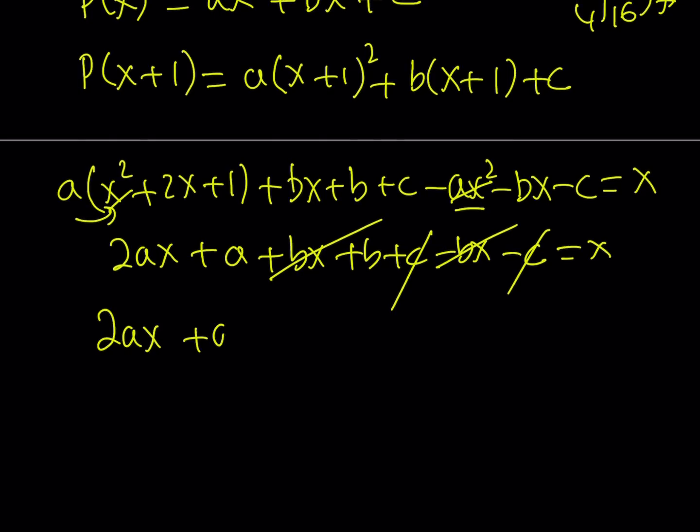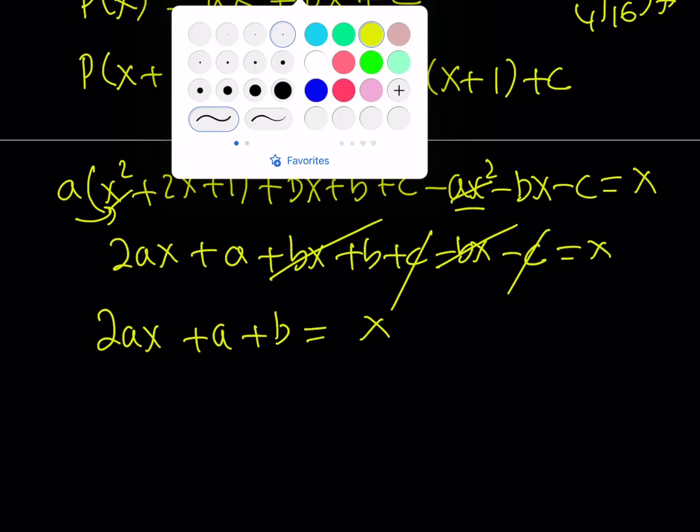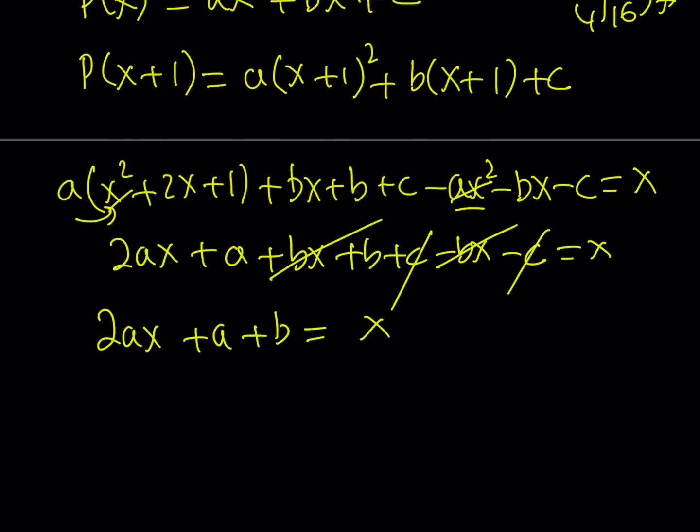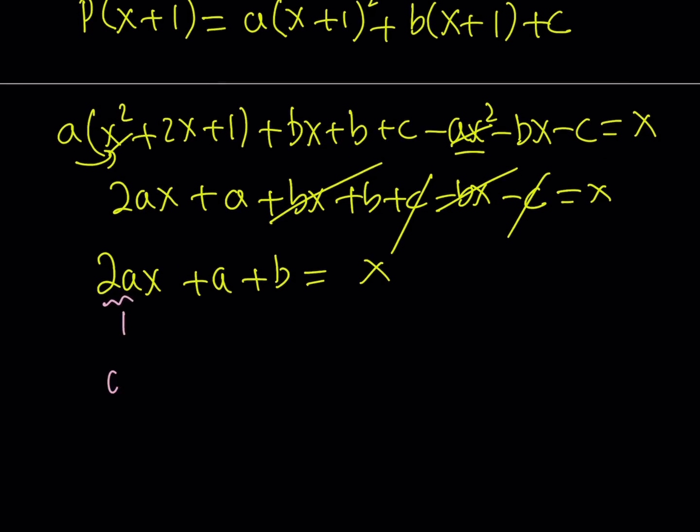2AX plus A plus B is equal to X. Now, this is true for all values of X since these are both polynomials. And this is a general equation. So we can safely say that the coefficient of X needs to be the same on both sides. So here, 2A needs to equal 1, which means that A is equal to 1 half.